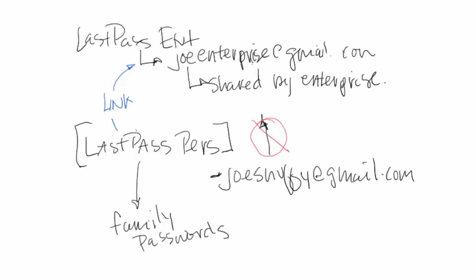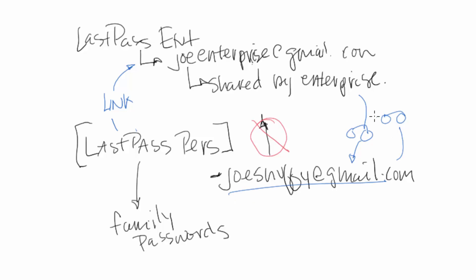That means when you are in your enterprise account, you can see all of your personal stuff. This gives you visibility into your personal things. But whoever is logged on to JoeSnuffy at gmail.com — the personal account — they cannot see the enterprise stuff. That's kind of how that works.